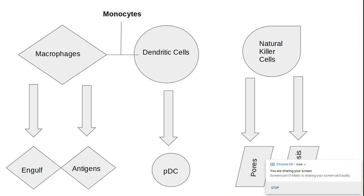Macrophages then present those antigens to antigen-specific T cells, connecting them to the adaptive immune system — specifically the B cells. Dendritic cells are similar to macrophages but are highly efficient at collecting antigen-presenting cells, making them critical to the innate and adaptive immune system responses as a whole.